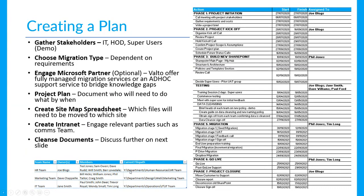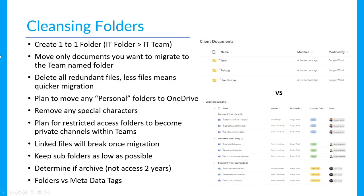Move only the documents you want to migrate to the named folder, leaving anything else behind for a separate archiving process. Delete all redundant files — fewer files means a quicker migration. Move personal folders into OneDrive and remove any special characters. Plan for restricted-access folders to become private channels within Teams. Be aware that any linked files — for example, an Excel document pulling data from 10 other Excel documents using hard-coded file paths — will break when migrated, as those file paths will change in SharePoint or Teams.